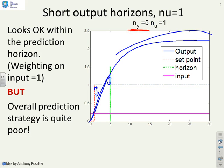But critically, when you go beyond the horizon, the errors are very poor. But of course, they don't appear in the performance index. And so clearly, the overall prediction strategy is quite poor, even though within the horizon, it looks not too bad.